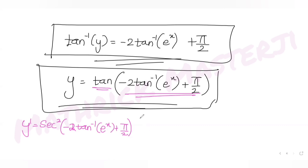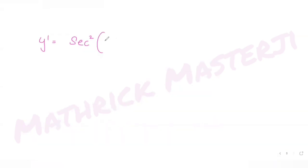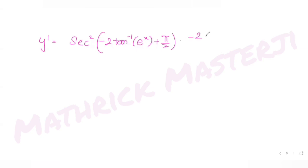Differentiating: y' = sec²(-2·tan⁻¹(e^x) + π/2) · (-2) · [e^x/(1 + e^(2x))]. Using the chain rule, the derivative of tan⁻¹(e^x) is e^x/(1 + e^(2x)).